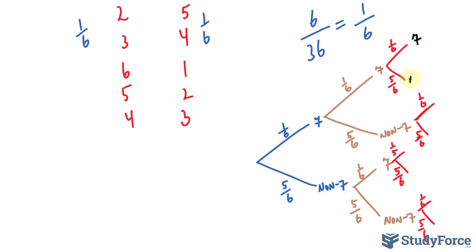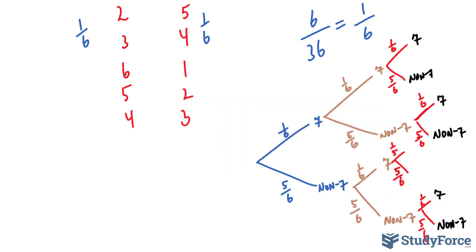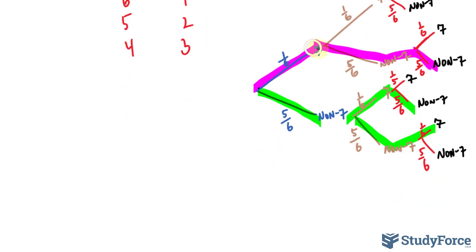On the tree diagram we label getting a seven or not getting a seven on each branch. Let's look at the pathways that lead to rolling a seven exactly once. One pathway is: we roll a seven the first time, then we don't, then we don't. Another pathway is: we don't roll a seven on the first try, then we do, then we don't. A third pathway is: we don't roll in the first round, we don't roll in the second round, but we do roll a seven in the third.